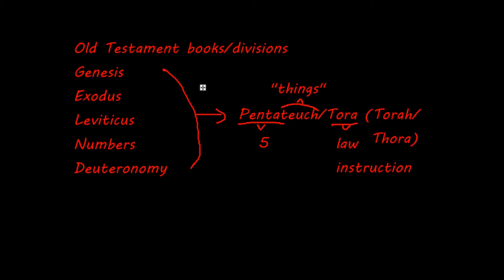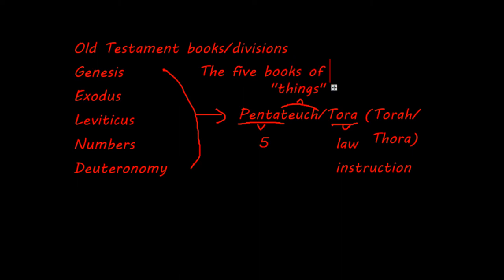Another interesting thing is that these five books are sometimes also called the five books of Moses. For example, in German Bibles they won't be called Genesis through Deuteronomy, but rather 1st, 2nd, 3rd, 4th, and 5th Moses.